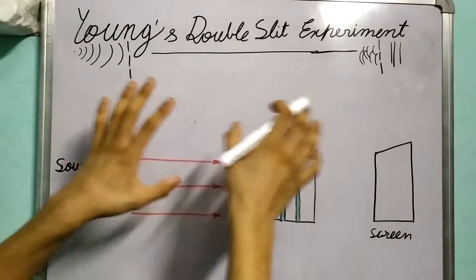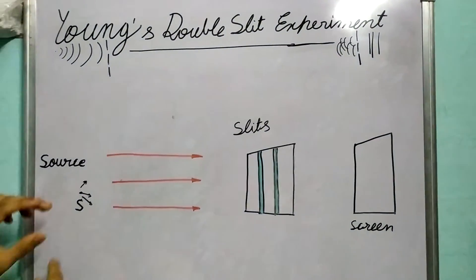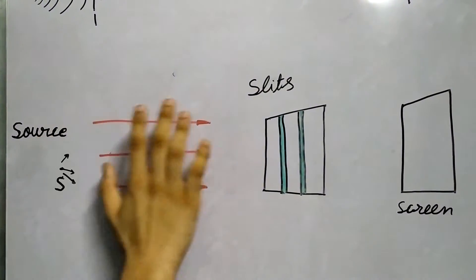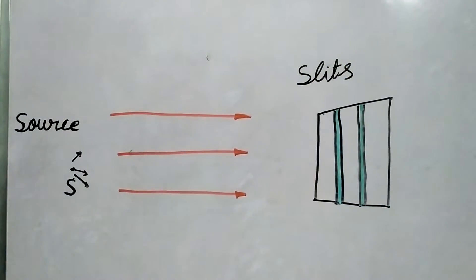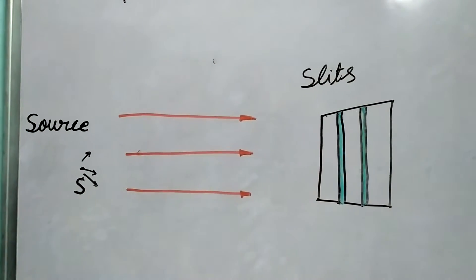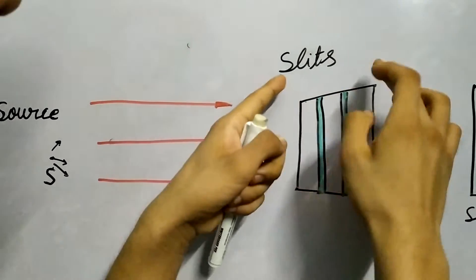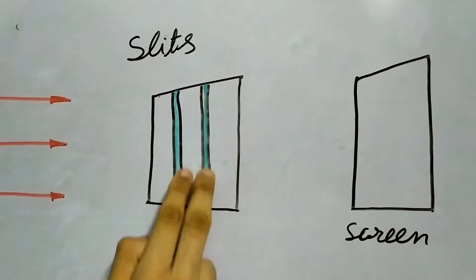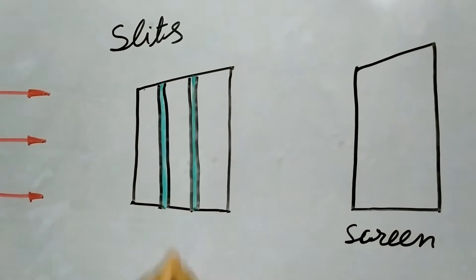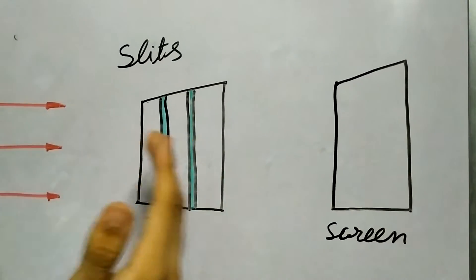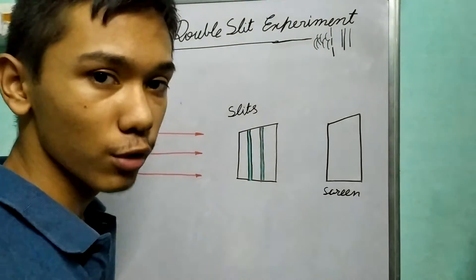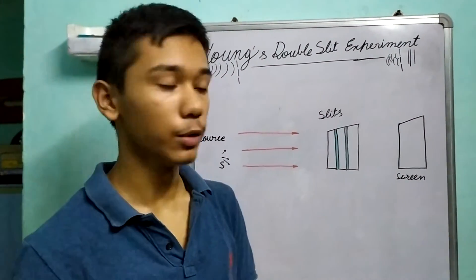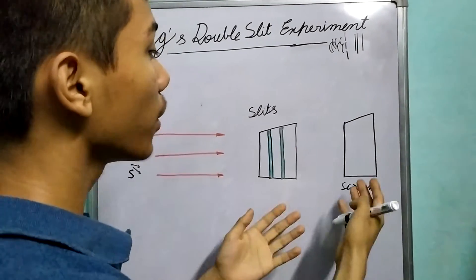So here's what Young's double slit experiment looks like. You have a source, let's call it S, and it emits light. It's better that the rays are nearly parallel — you can have a lens there to make them parallel. And then you have this plate, but the important thing is you make two slits — the green ones are the slits — and light will pass through the two slits. Using your intuition about how light behaves and interacts with objects around you, what pattern will form on this screen?